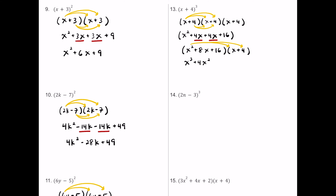Then 8x times positive 4 is positive 32x. Moving to the 16: 16 times x is plus 16x. And 16 times 4 is plus 64. Now simplifying: x cubed has no like terms, so it stays alone.